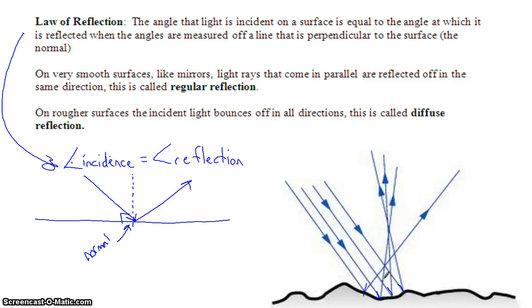And so whenever you have a glare on something, that's kind of some mixture of the two, and it just depends on the smoothness of the surface, and what percentage of the parallel light rays will bounce off and remain parallel.